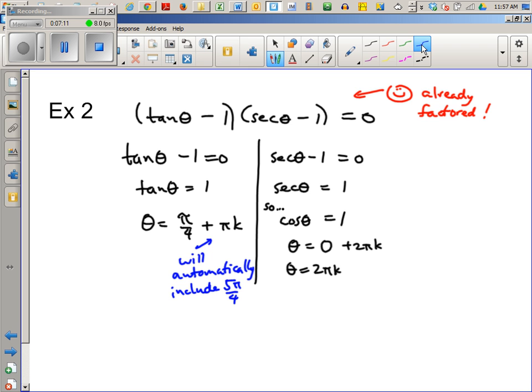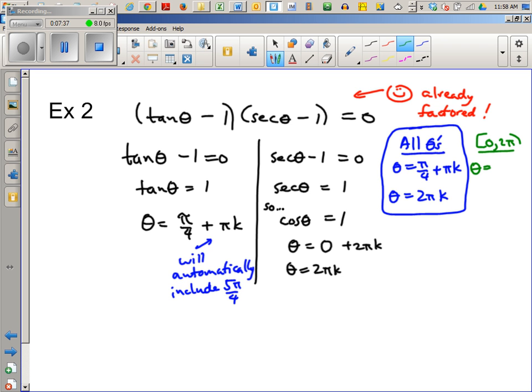Okay, so answers in blue. All thetas. My answers would be theta equals π over 4 plus πk. And theta equals 2πk. Those are for all possible thetas. If we want to stick to angles just between 0 and 2π, theta is π over 4 and 5π over 4. And 0. All right.